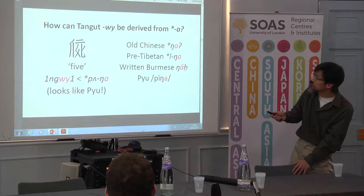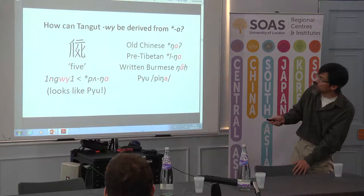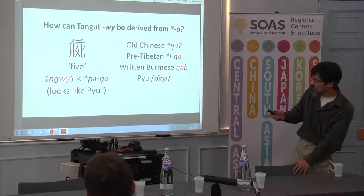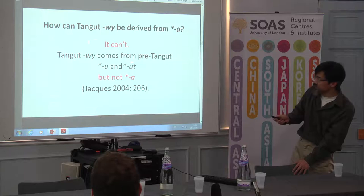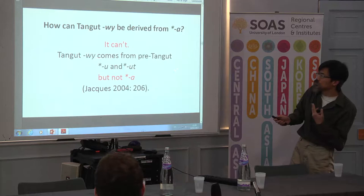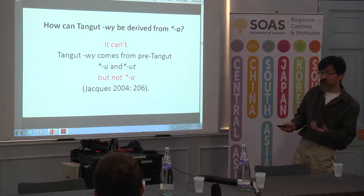How can we bridge the gap between this W and A? The short answer is, you can't. Tangut W normally should come from pre-Tangut U or Ut, but not A, as Guillaume Jacques demonstrated in his book. So what is going on?